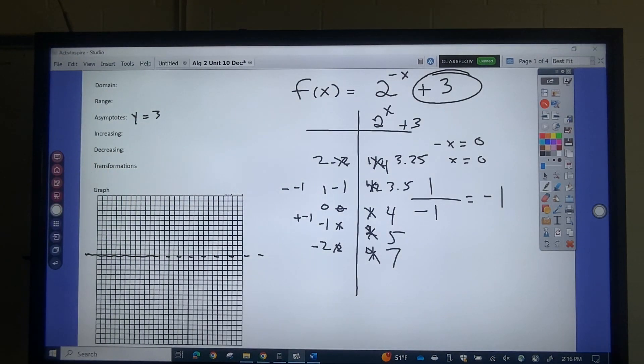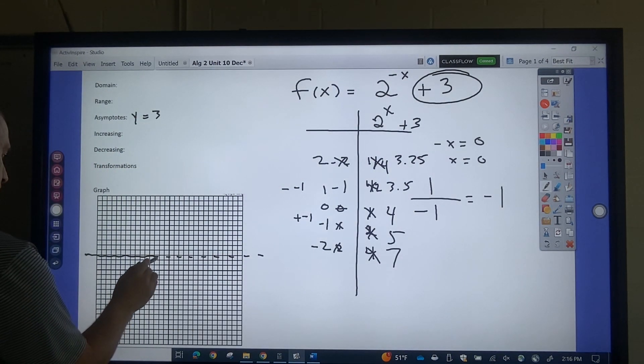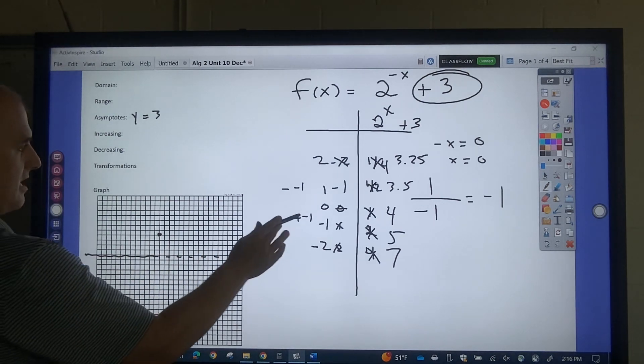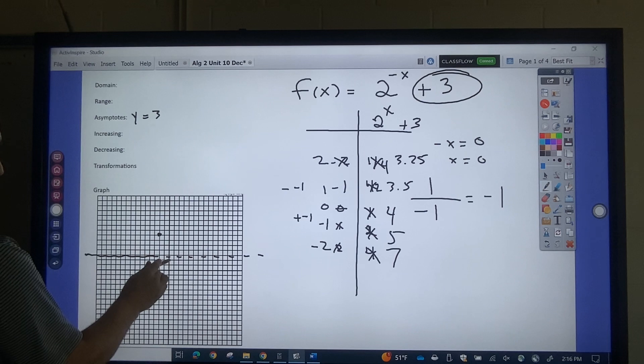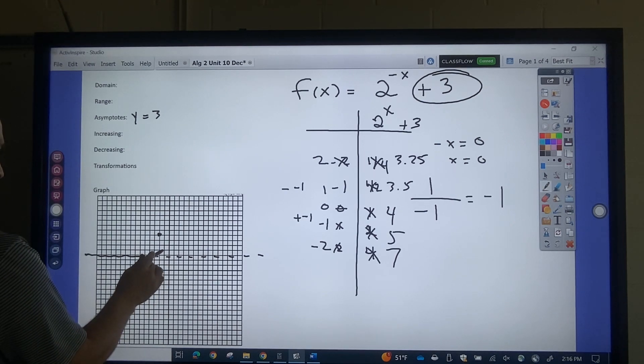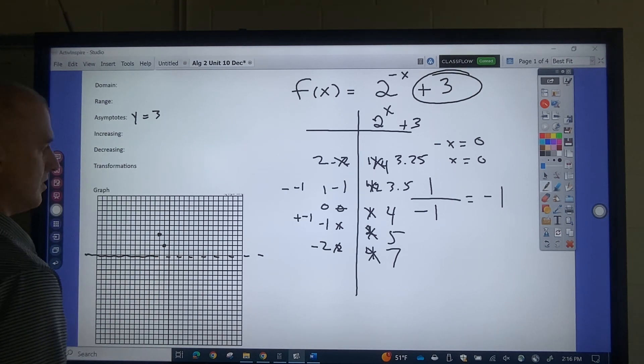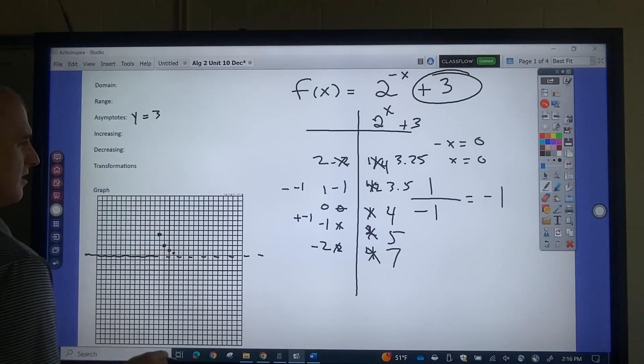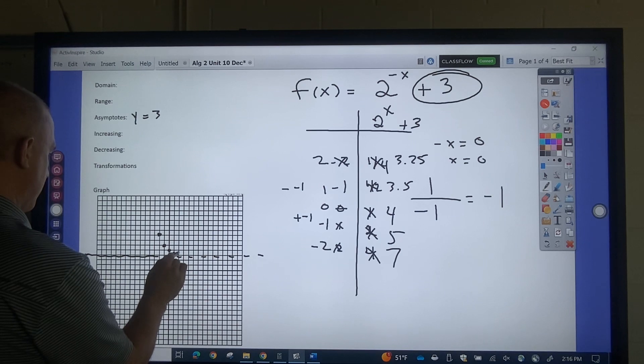So negative 2 over, 7 up, 1, 2, 3, 4, 5, 6, 7. Then negative 1 over 5 up, 0 over 4. 1 over 3.5, 2 over 3.25.